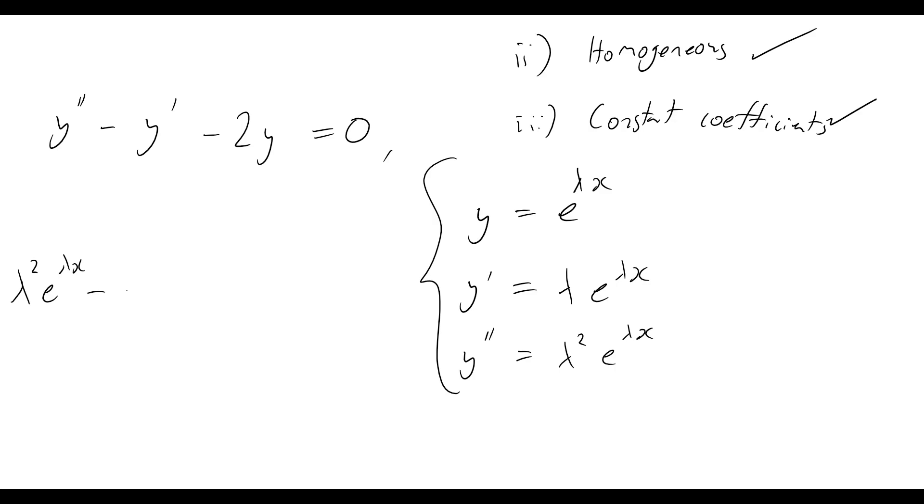well, y prime would now become lambda e to the lambda x minus two times y, which is simply e to the lambda x. And we say that is all equal to zero.